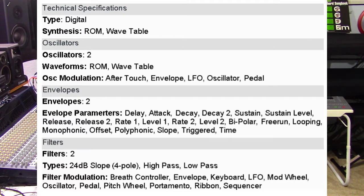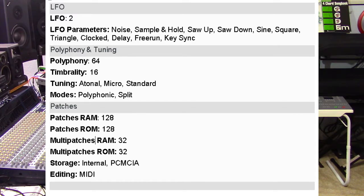The unit has two filters. The filter types are 24 decibel slope, four-pole high-pass and low-pass filters. The filter modulation consists of breath controller, envelope, keyboard, LFO, modulator, oscillator, pedal, pitch wheel, portamento, ribbon, and sequencer. It has two LFOs; the LFO parameters include noise, sample and hold, saw up, saw down, sine, square, triangle, clock, delay, free run, and key sync. The unit is 64-voice polyphonic and 16-voice multi-timbral.